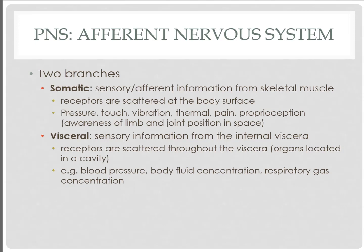For visceral sensory information, this is information coming in from our internals. These receptors, of many different sensory modalities — whether chemical or pain — are located throughout the viscera and send information about the natural state of the inside of our body, such as blood pressure, heart rate, body fluid concentration, or even the gases that flow through our circulatory system.